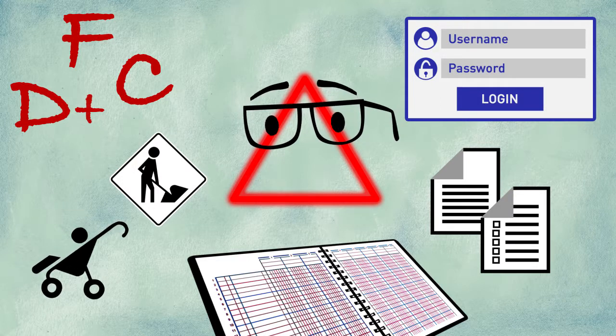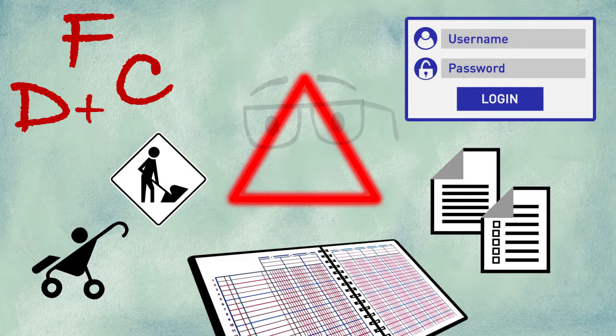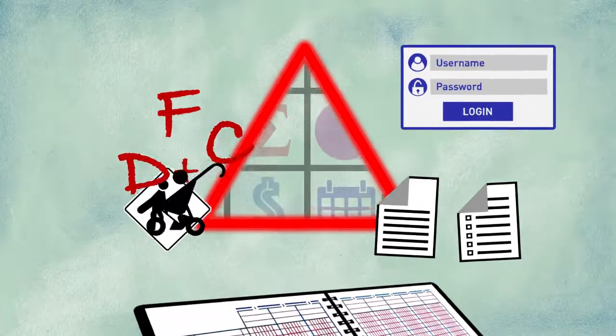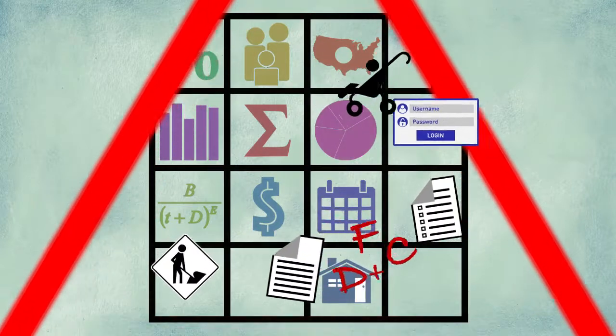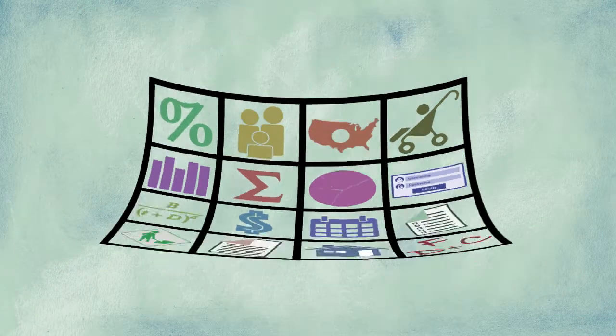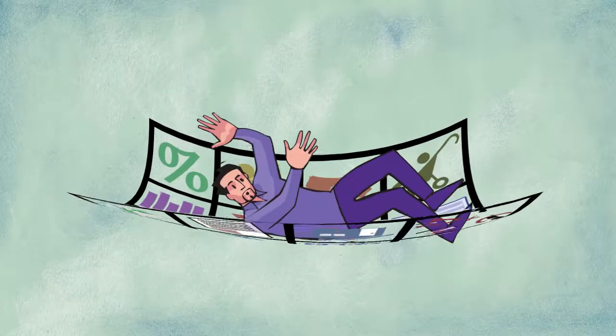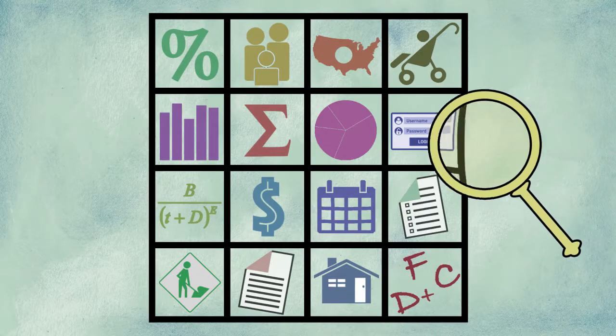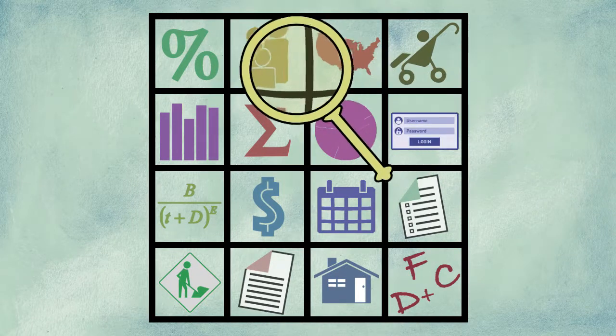All the information is combined and analyzed to identify at-risk students before they get into trouble in your class. The better retention early warning systems have been tested to make sure their predictions are accurate.